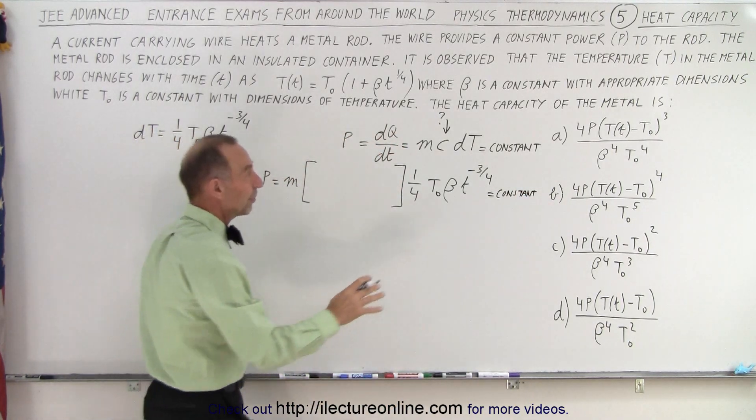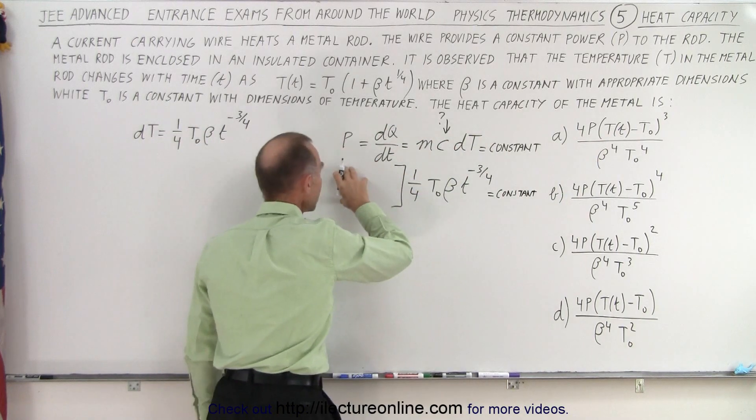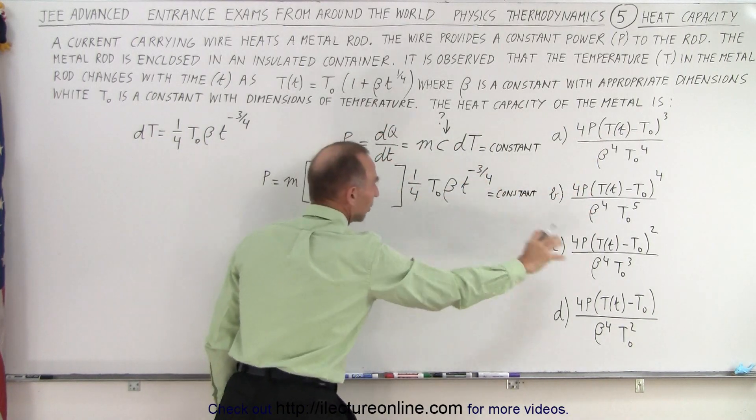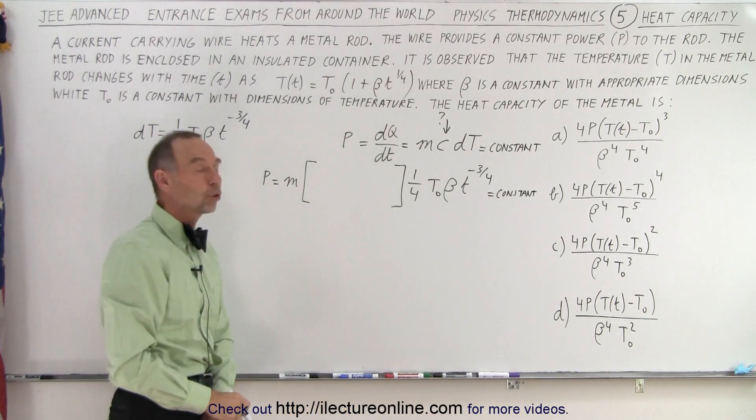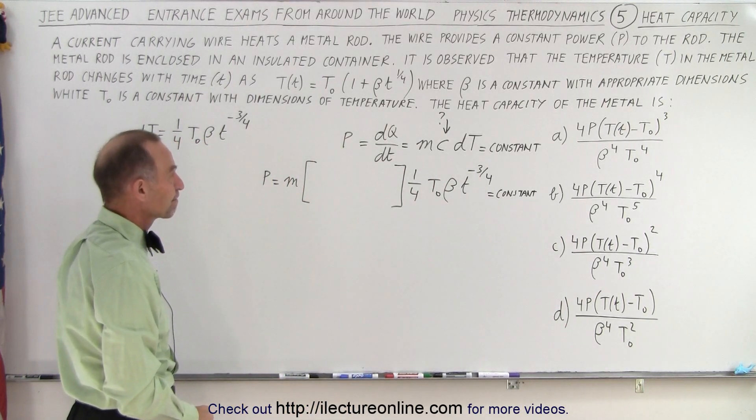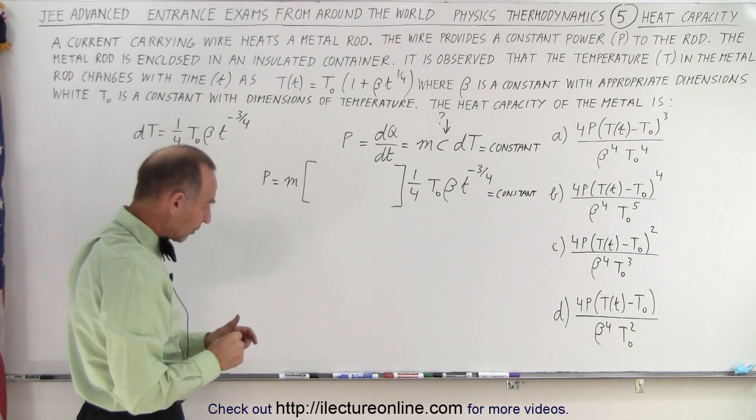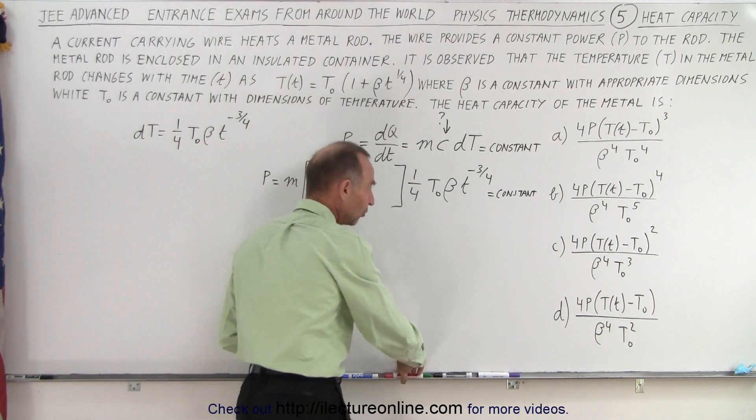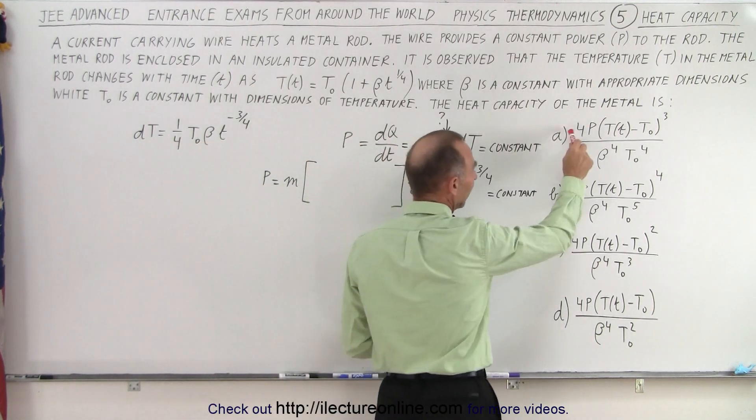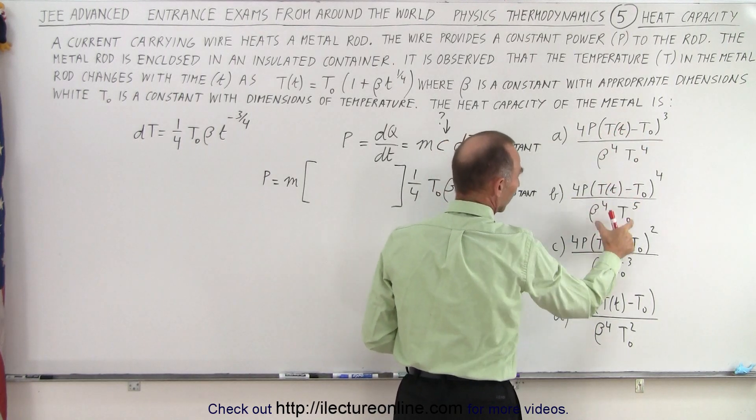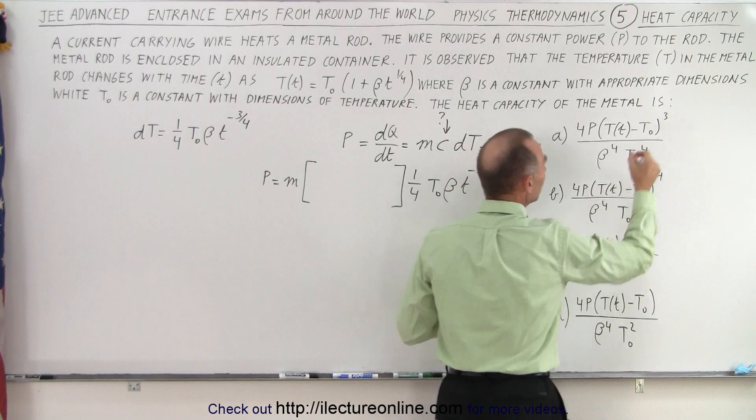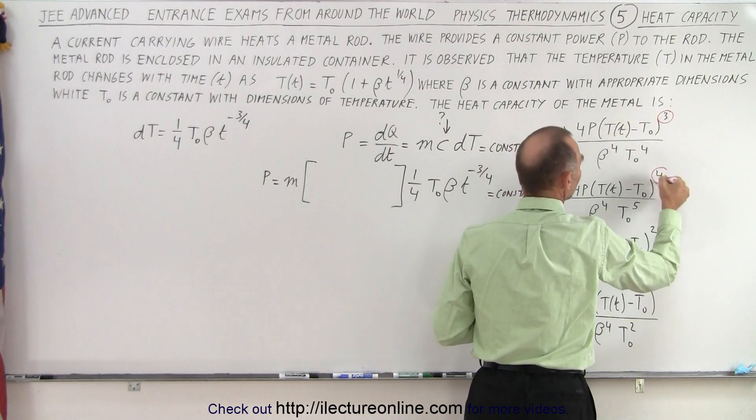Which means that whatever we put in here, we put in A, we put in B, we put in C, or we put in D, that this must be a constant quantity. Now if I look at the four possible answers, notice there's a lot of similarity. They all have 4P in the numerator, the quantity T minus T sub naught, but only the exponents of that change.